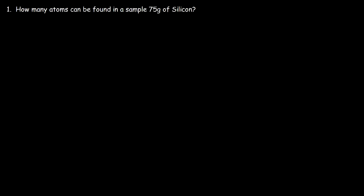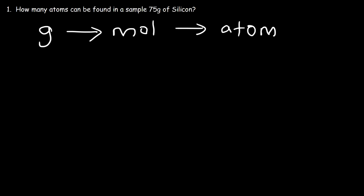In this lesson, we're going to focus on converting grams to atoms. So let's start with this problem: how many atoms can be found in a sample of 75 grams of silicon? So how can we convert grams to atoms? First, you need to convert grams to moles, and then moles to atoms. That's the blueprint of what we need to follow.